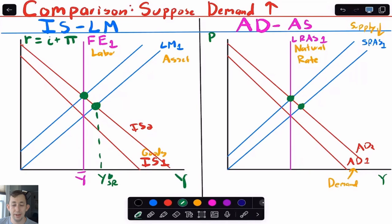So what both the IS-LM and the aggregate demand aggregate supply models are telling us is that if you increase demand, you are not going to increase output in the long run unless you change the full employment or the long-run aggregate supply curve. All that's going to happen is you'll get a boom in the short run; that boom leads to inflation, and you end up back at the natural rate of output — just with a higher price level or a higher real interest rate. Both models give you the same qualitative story and trace out the same series of events for a given shift in demand or supply.